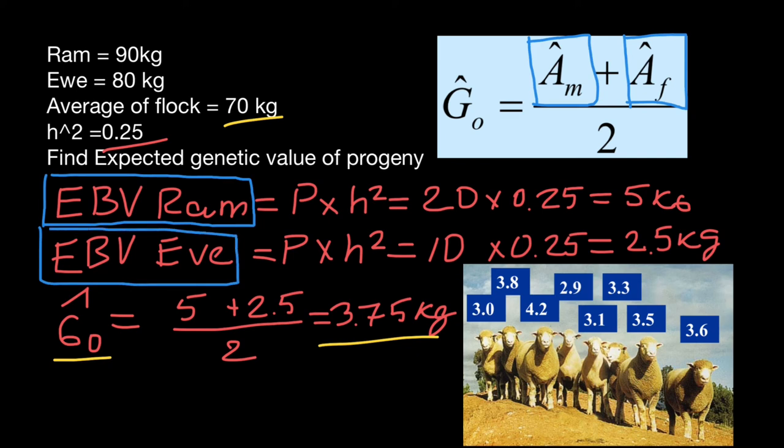It's just two different notations that mean the same thing. In other words, estimated breeding value of a parent, for example male parent, would equal phenotype times narrow-sense heritability, which is in our calculations shown here.